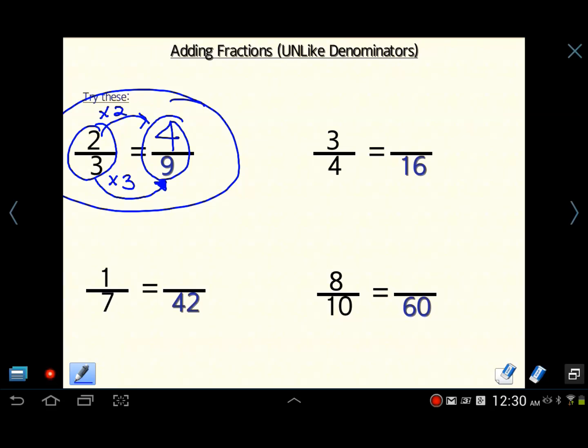Moving along to this one. How many times does four factor into sixteen? Four times four is sixteen. Therefore, we're going to multiply the three by four. Three times four is twelve. So three-fourths equals twelve-sixteenths.